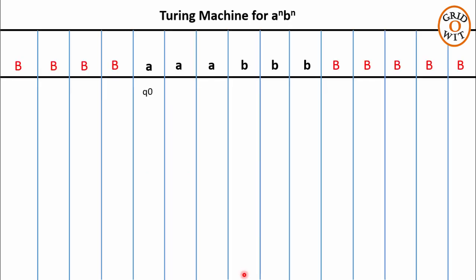Let us take one more example to see how many states we require in this Turing machine. For n equals 3, we have three a's followed by three b's on the input tape. Initially, q0 is pointing to the leftmost a.